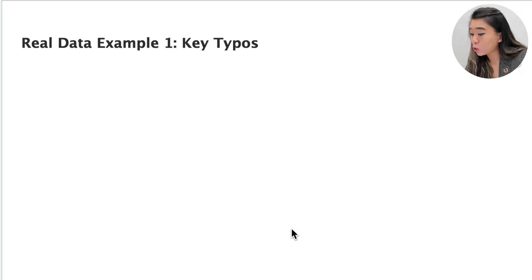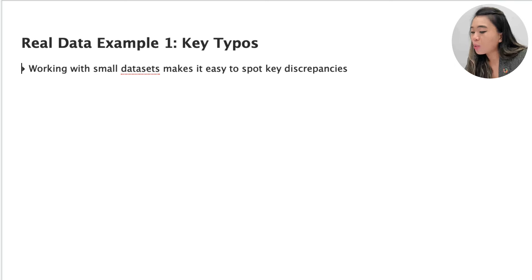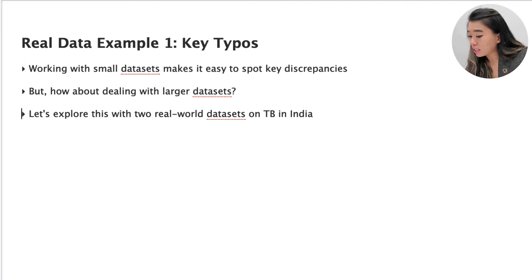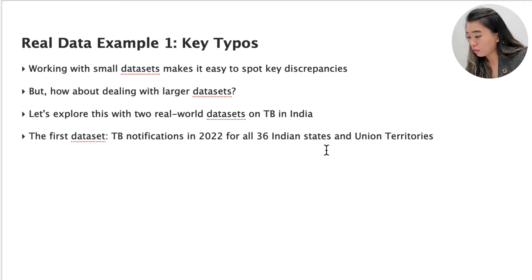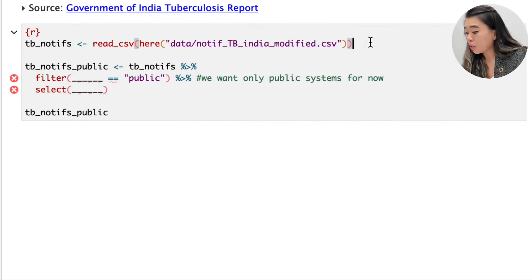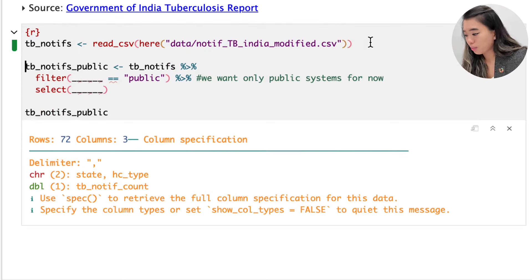Let's now look at key typos using real data examples. In small data sets it's quite easy to notice differences in key columns, but what about much bigger data sets? To illustrate this, let's look at two real-world data sets on TB in India. The first data set covers TB notifications in 2022 for all 36 Indian states and union territories, taken from the Government of India tuberculosis report.